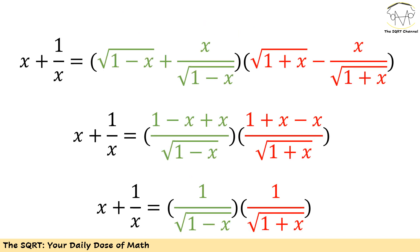To solve this I'm going to simplify it a little bit further. The left hand side is x plus 1 over x, which is okay, but on the right hand side I have two big terms. Focusing on the first term — radical(1 minus x) and x over radical(1 minus x) — after simplification I end up with a fraction with radical(1 minus x) on the bottom, and on top 1 minus x plus x, which simplifies to 1 over radical(1 minus x). Following the same approach for the second term gives 1 over radical(1 plus x).